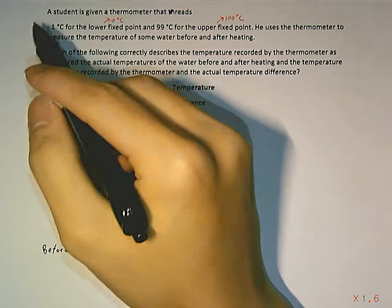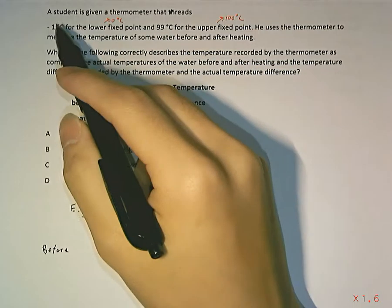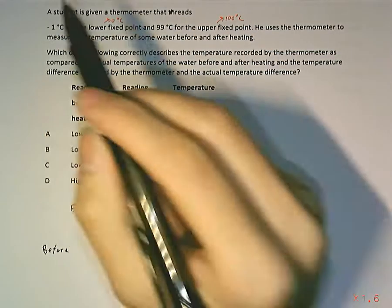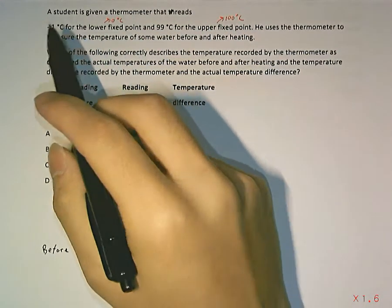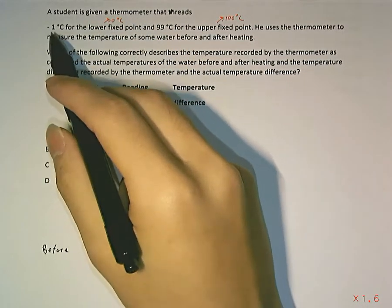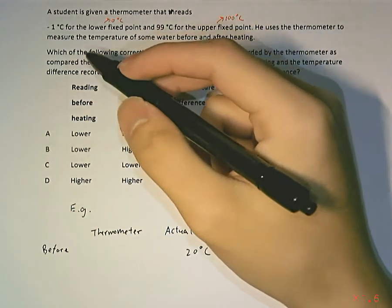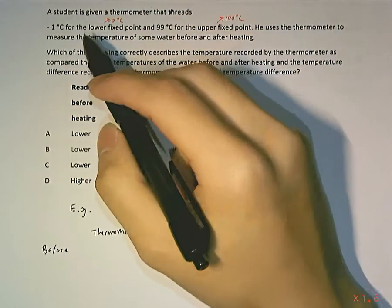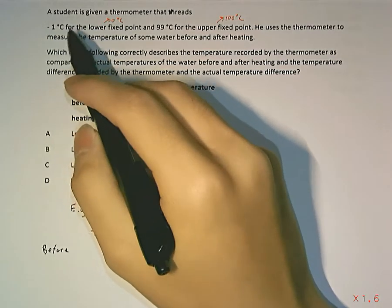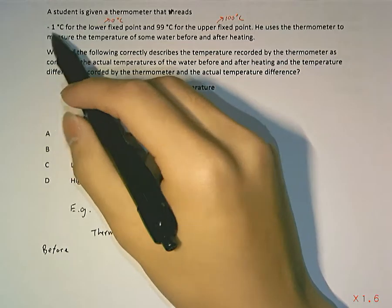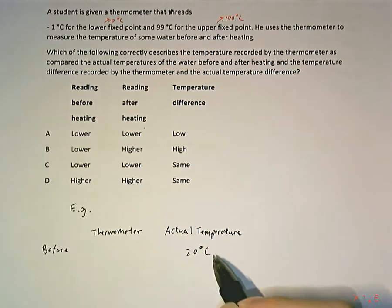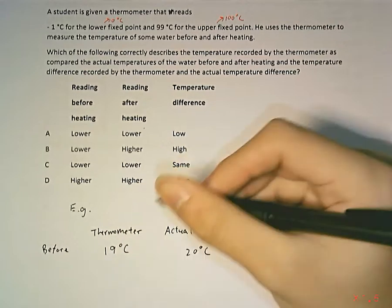The range of negative 1 to 99 degrees Celsius is the same as the range from 0 to 100 — the difference between upper and lower temperature is the same. So the problem with this thermometer is not that its scale is off — a 1 degree change still shows up as a 1 degree change. The problem is that every temperature recorded is going to be 1 degree Celsius lower. So 0°C is recorded as -1°C, and 100°C is recorded as 99°C, and 20°C is recorded as 19°C.